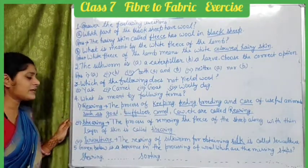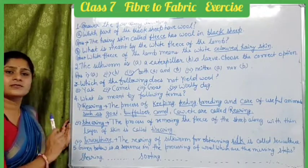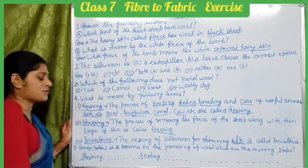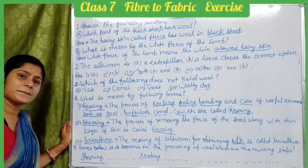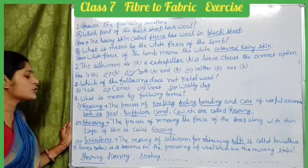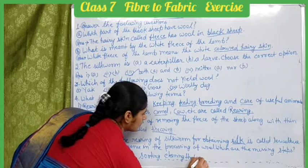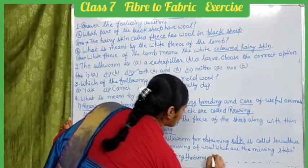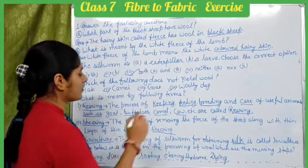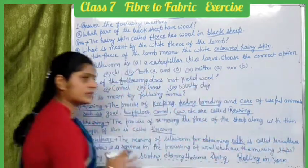The next question gives a sequence in the processing of wool — we had studied six steps. The sequence is: first, shearing; then scouring (washing in a tank); then sorting; then cleaning the burrs; then dyeing with colors; and finally rolling into yarn. These are the six steps of wool processing.